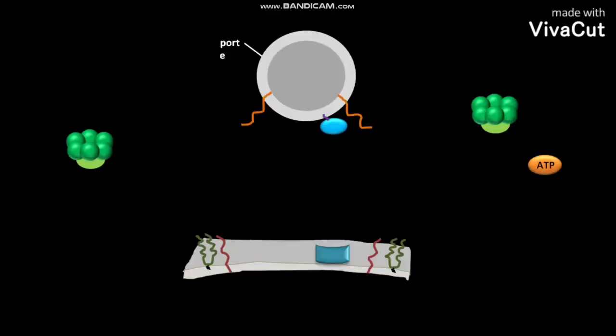This is a transport vesicle or secretory vesicle. The Rab-GTP is tethered via a lipid anchor to the secretory vesicle. The Rab protein belongs to the GTPase superfamily of switch proteins.